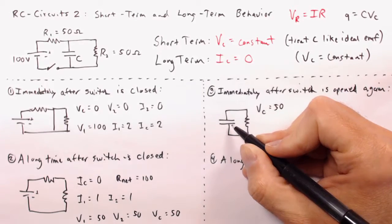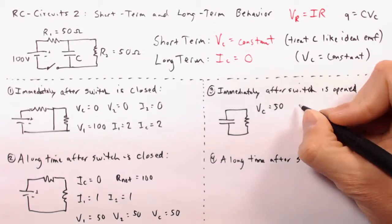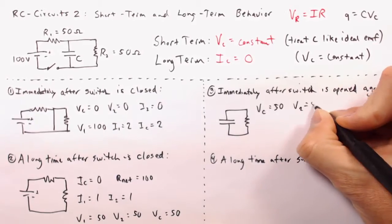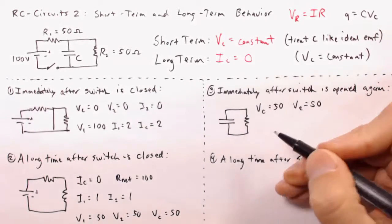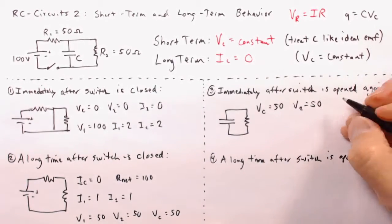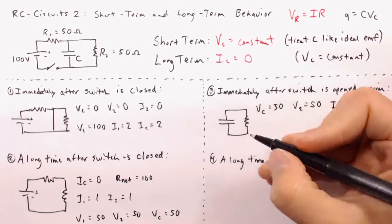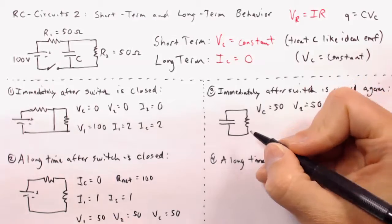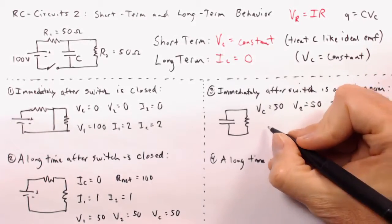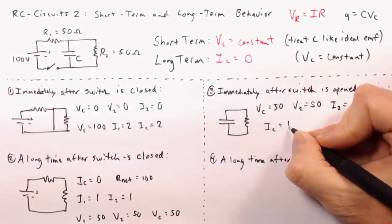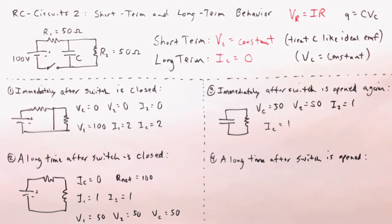Here's resistor number two. It's in parallel to the capacitor, and therefore V2 equals 50. With a voltage of 50 and a resistance of 50, no great shock that the current is one ampere. And these two are not only in parallel, they're also in series, and whenever things are in series, they have the same current, and therefore the capacitor will also have one ampere of current.